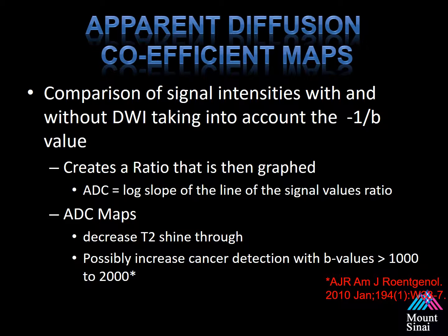What is an apparent diffusion coefficient map, or ADC map? Essentially, this evaluates the slope of the line created by the different B-values in diffusion-weighted imaging and creates one composite image sequence to review. These image sequences show up as areas of low signal. ADC maps can be evaluated — if one removes the B0 value, it can decrease T2 shine-through, which could impact diagnostic potential. However, increasing and using B-values greater than 1,000 can improve the diagnostic potential of these studies.